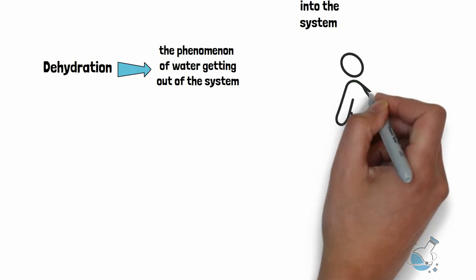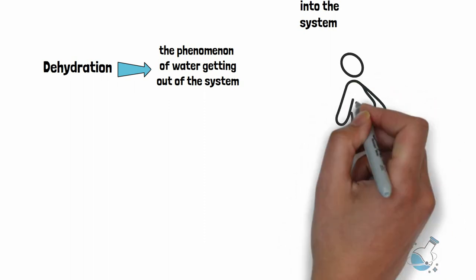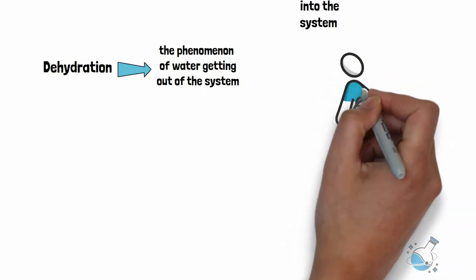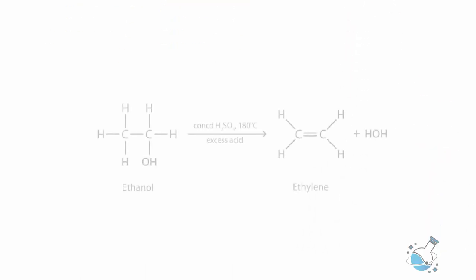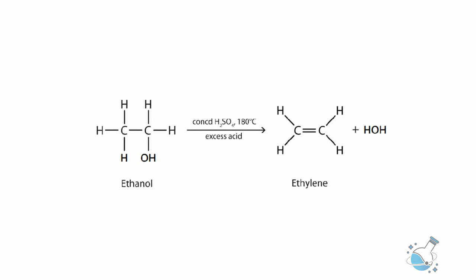Now, as you understand the idea of dehydration in real life, you can quite easily understand what the dehydration of alcohol means in organic chemistry. Alcohols undergo dehydration to lose one molecule of water and end up being converted into an alkene, the functional group of which is a carbon-carbon double bond.